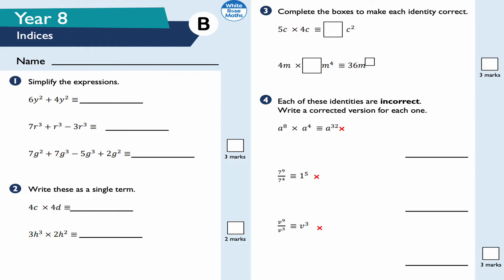Question number one: simplify the expressions. 6y squared plus 4y squared — combining that I get 10y squared, because 6 plus 4 is 10. Next: 7r cubed plus r cubed minus 3r cubed. 7r cubed plus 1r cubed is 8r cubed, subtract 3r cubed is 5r cubed.